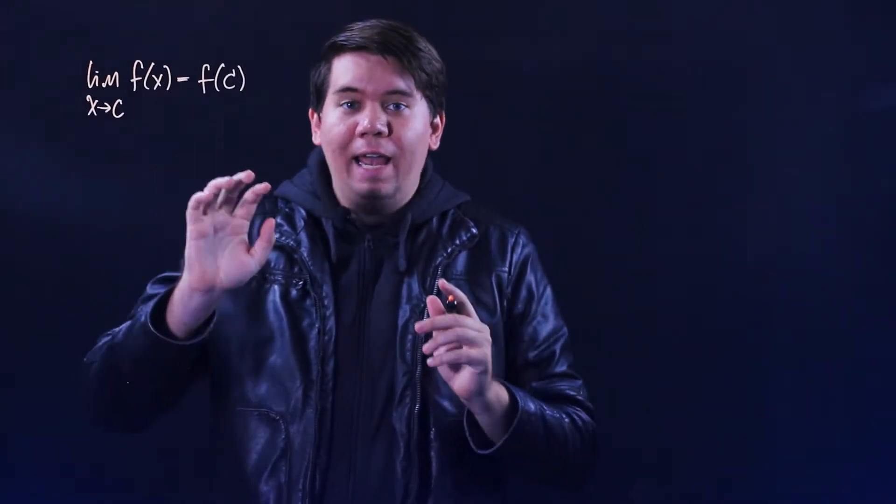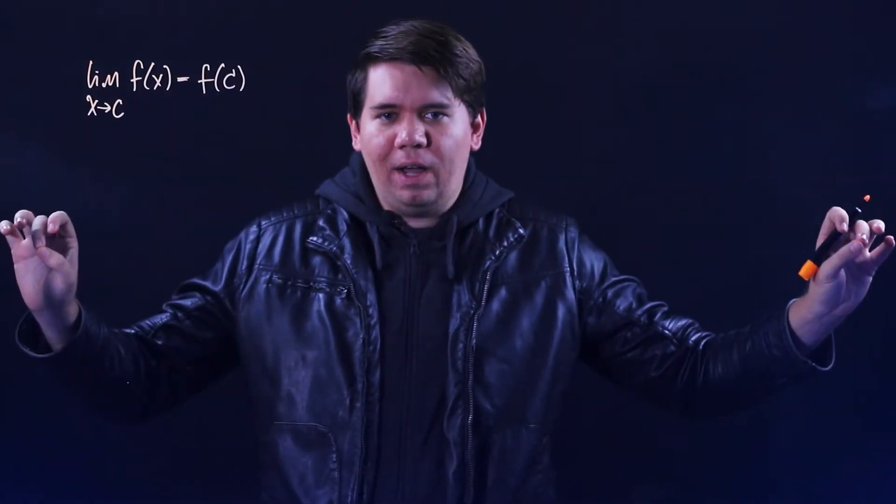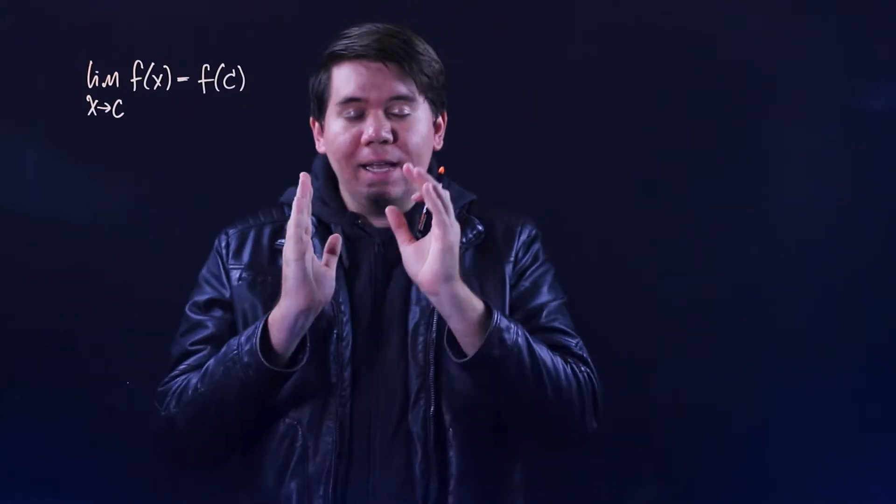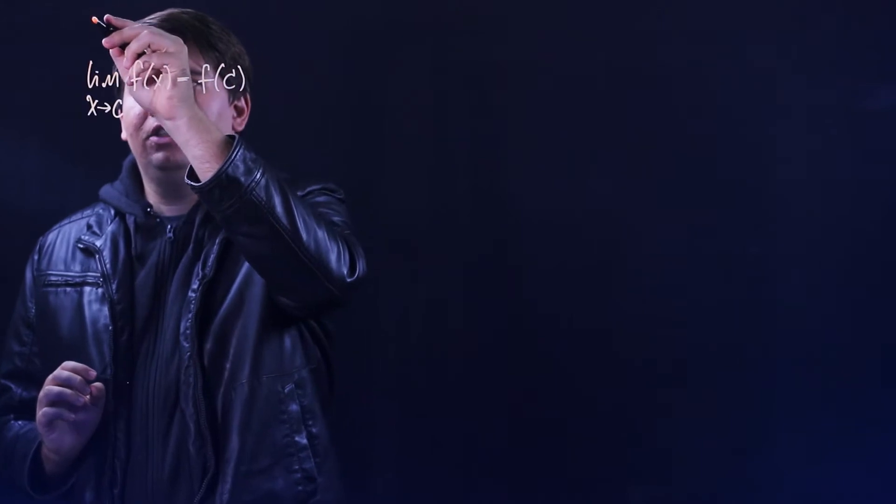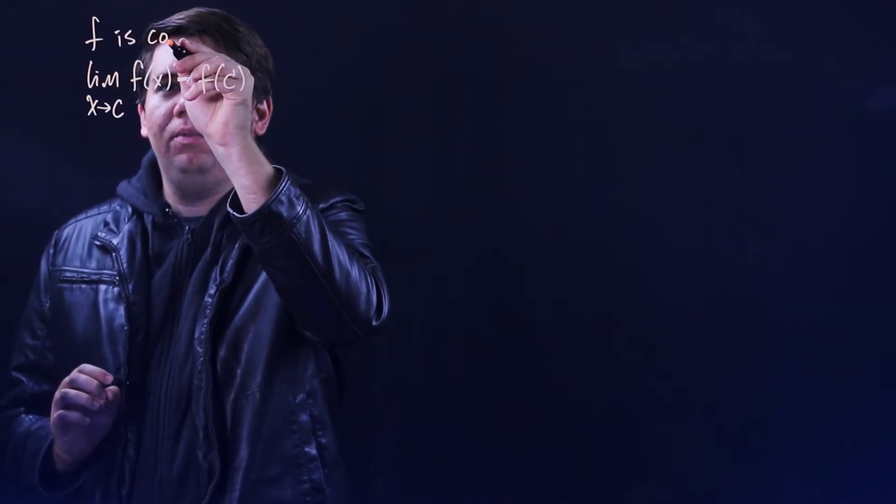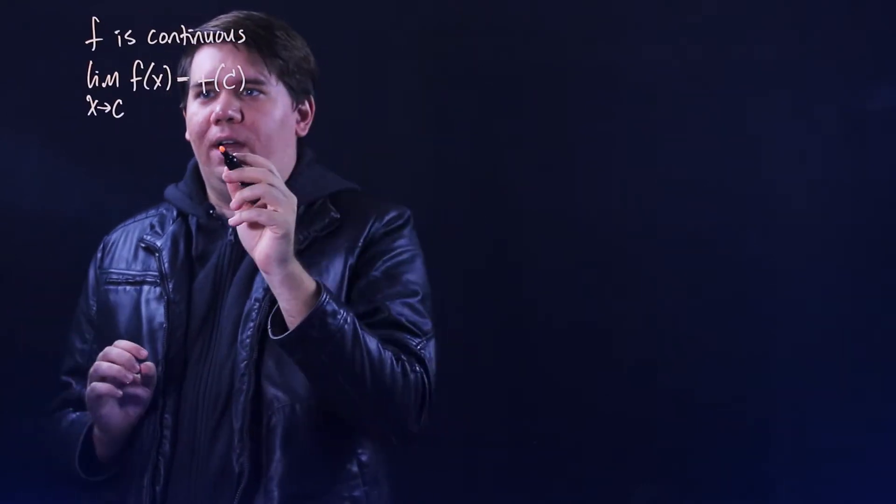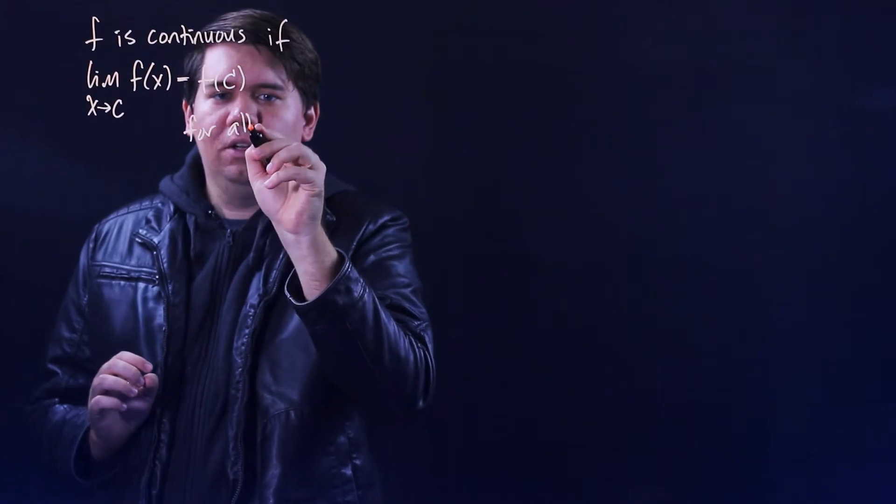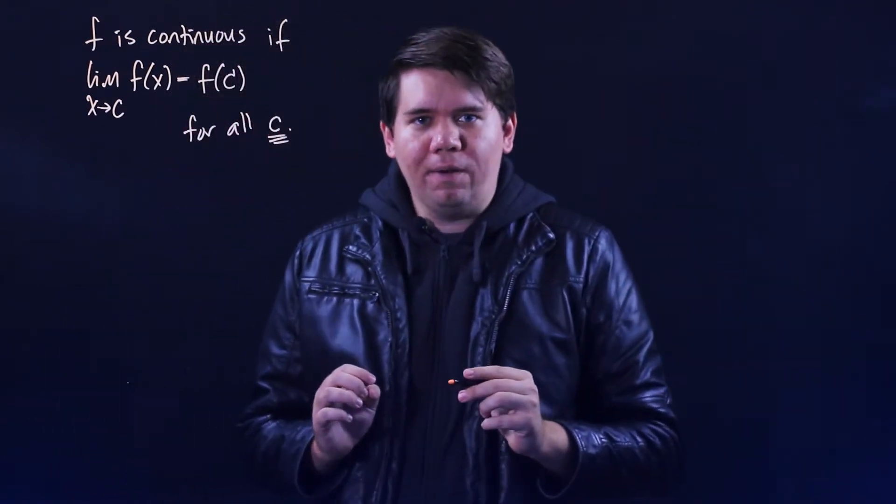Now, if this is true everywhere on the function, if for all values where the function is defined there are no holes, no gaps, no vertical asymptotes to worry about, then we say that the function f is a continuous function. The function is continuous everywhere it's defined if this condition is held for all c, for all c where the function is defined.